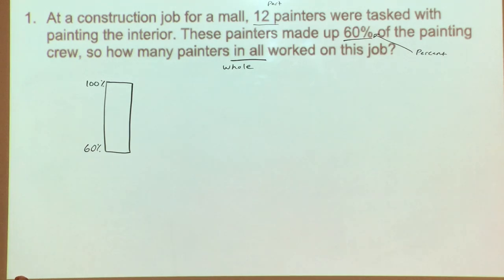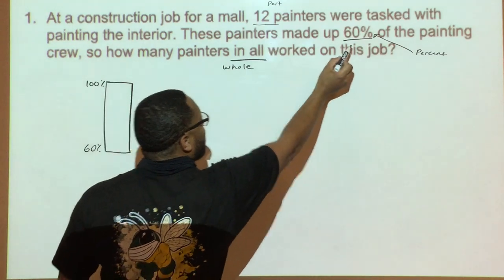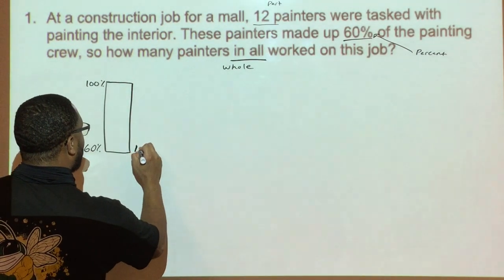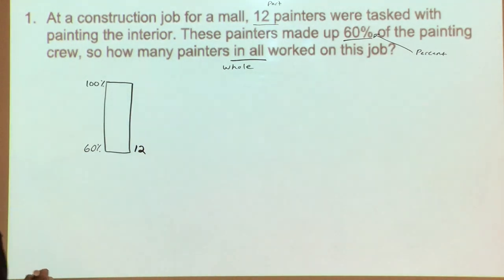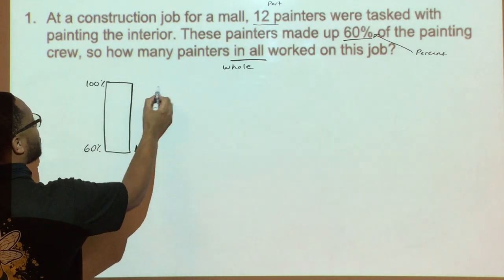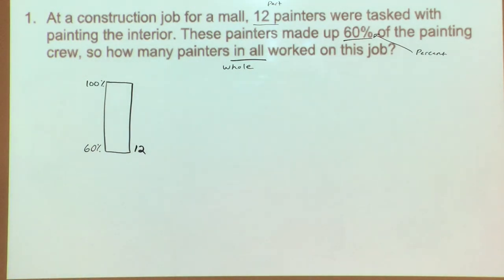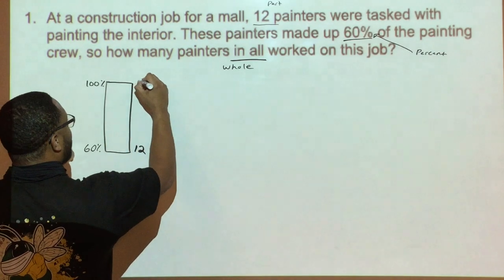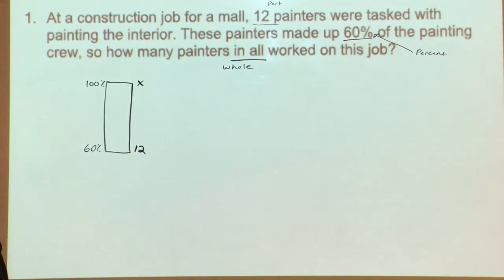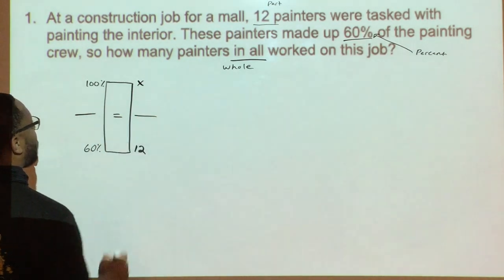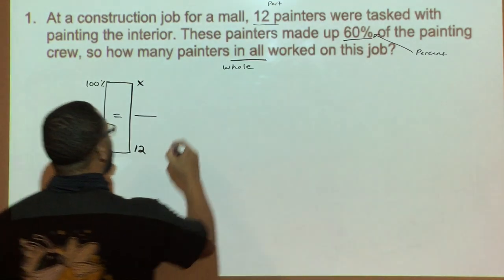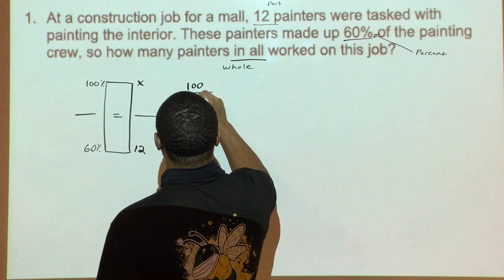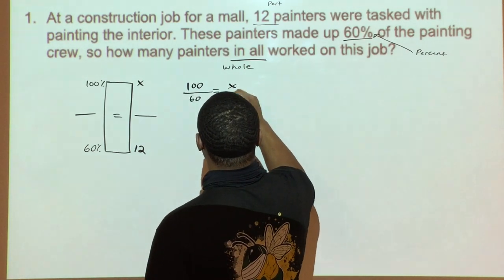What I want to see is what matches with 100 and what matches with 60. The problem says 12 painters made up 60%, so 12 goes over here on the right. I do not know how many workers in all worked on this job site — that's 100% — so I'm going to put X here. Now I have a proportion: 100 over 60 equals X over 12.